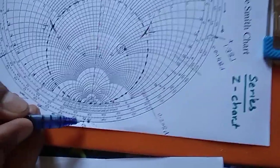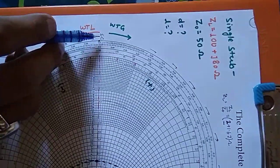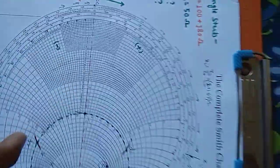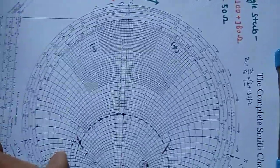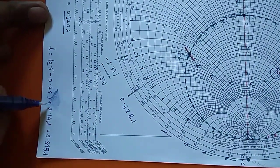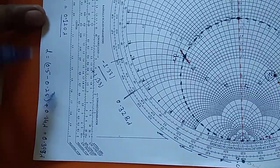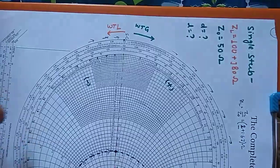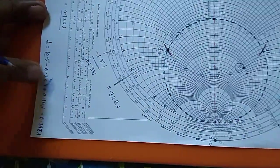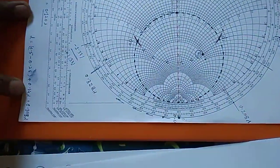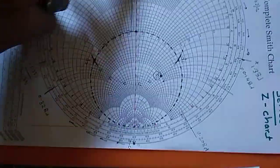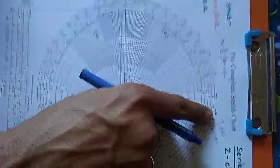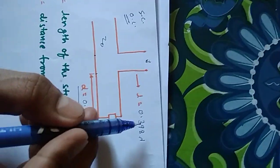We started from 0.25 lambda and reached to 0.5 lambda then continued to 0.148 lambda. I cannot directly subtract, so the length is calculated as 0.5 minus 0.25 plus 0.148 lambda. So 0.5 corresponds to this value, 0.25 corresponds to the open circuit, and 0.148 lambda corresponds to the j1.33 point. This gives a length close to 0.398 lambda. So the length of the stub is 0.398 lambda and the distance from the load is 0.120 lambda.